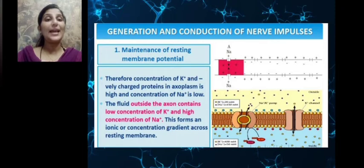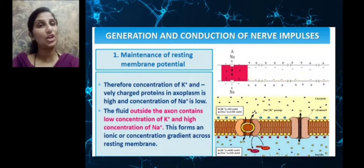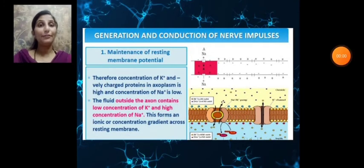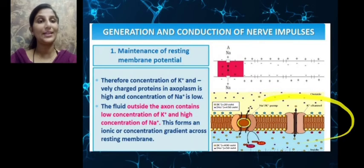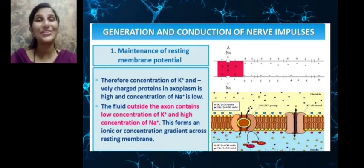The concentration of K+ and negatively charged ions in the axoplasm is high. Inside the axoplasm, there is a greater concentration of K+ ions and negatively charged proteins, whereas there is less concentration of sodium ions. The fluid outside the axon contains a greater concentration of sodium ions and less concentration of K+ and negatively charged proteins. As a result, an ionic difference develops across the membrane when it is at rest.